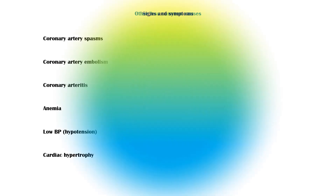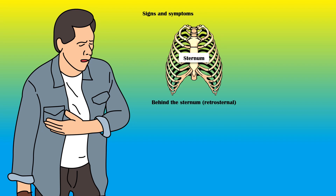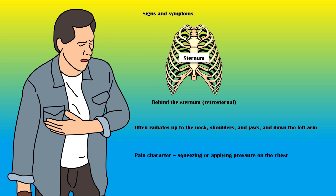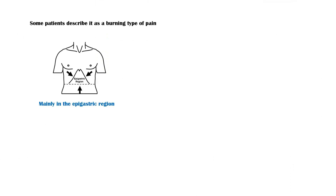The most common and concerning symptom of myocardial infarction is chest pain, which is typically felt behind the sternum, and often radiates up to the neck, shoulders, and jaws, and down the left arm. The pain is often described as squeezing or applying a pressure on the chest, and it usually lasts for about 30 to 60 minutes. However, some patients describe it as a burning type of pain, mainly in the epigastric region, with a sensation of abdominal fullness.